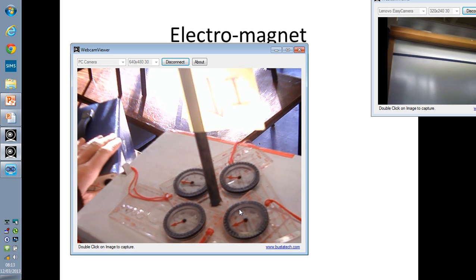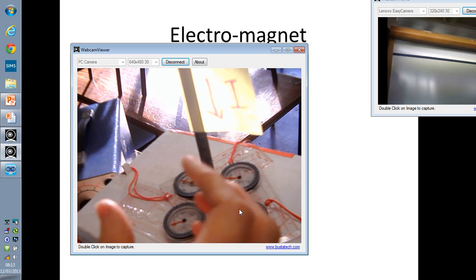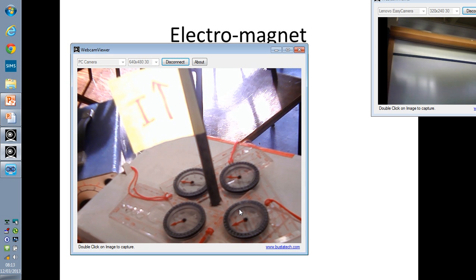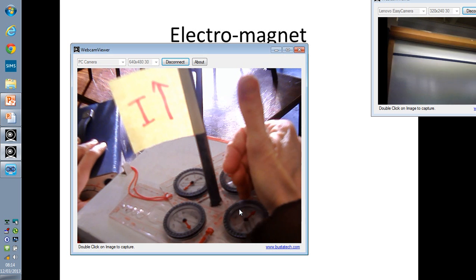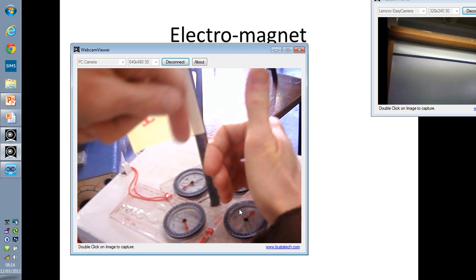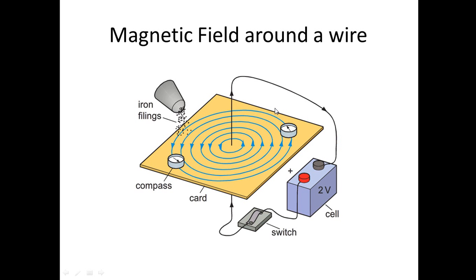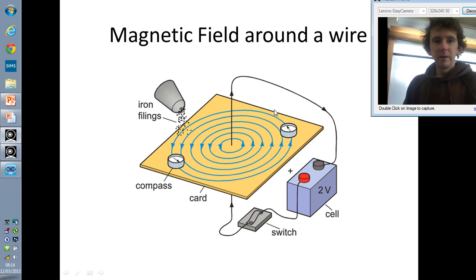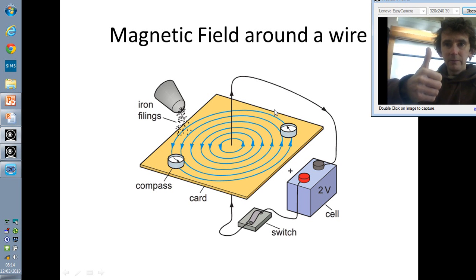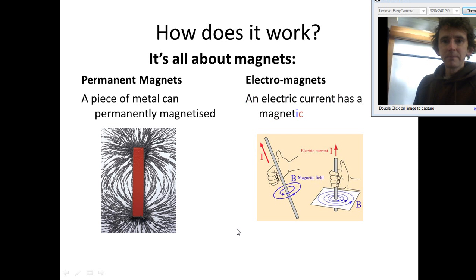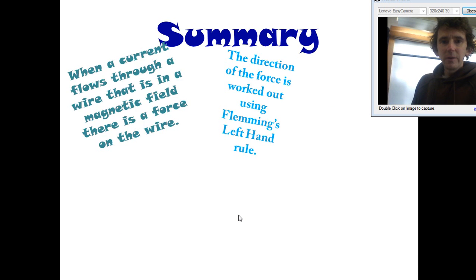If I turn the field on, look at the compasses — look what happens to the compasses. They all switch around and they line up in a circle around the field. Now if I turn that round, I've got current flowing upwards. Turn this on again and again they all line up around the field. If I show you my hitchhiker rule — thumb up — the points all point around in this direction. So, electromagnets: electric currents make their own magnetic field. And there's the shape of the field. It just goes round and round — using your right-hand thumb. If this is the direction of the current, that's the direction of the field lines. Electromagnets have their own magnetic field. Let's see what the Naked Scientist has to say about it all.